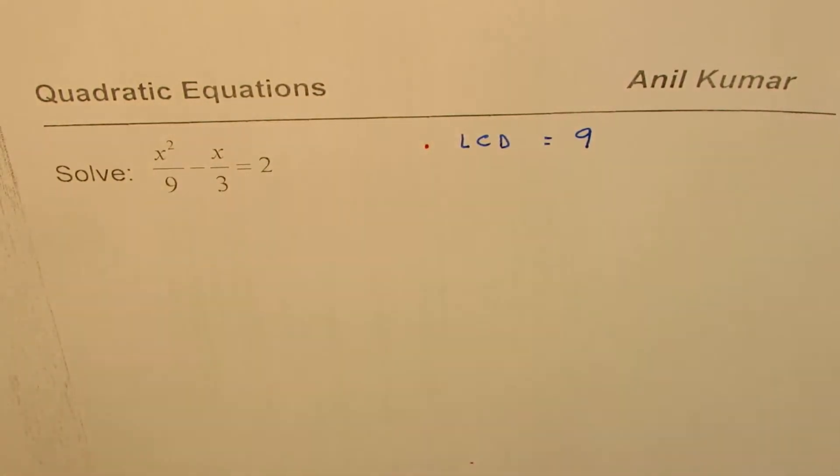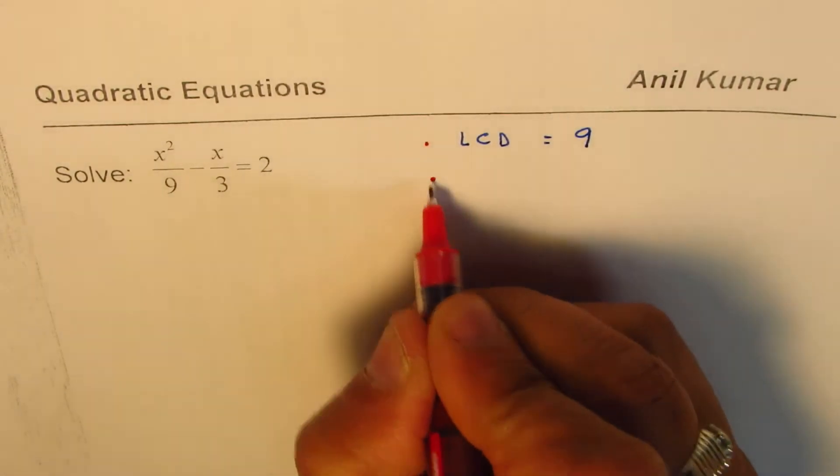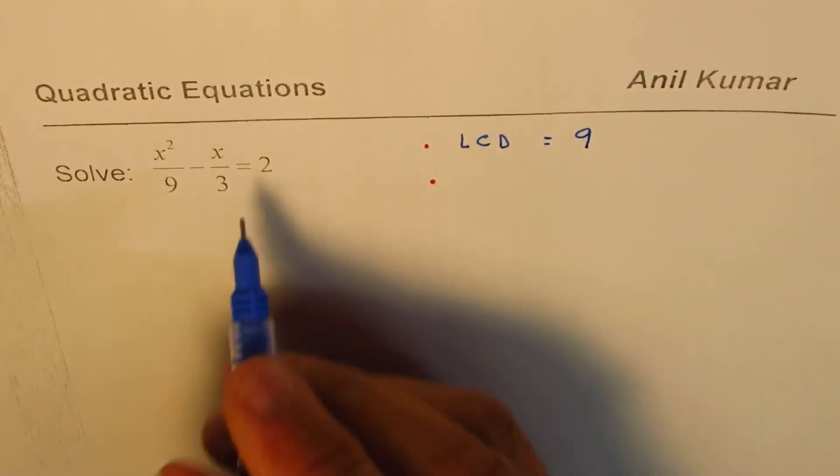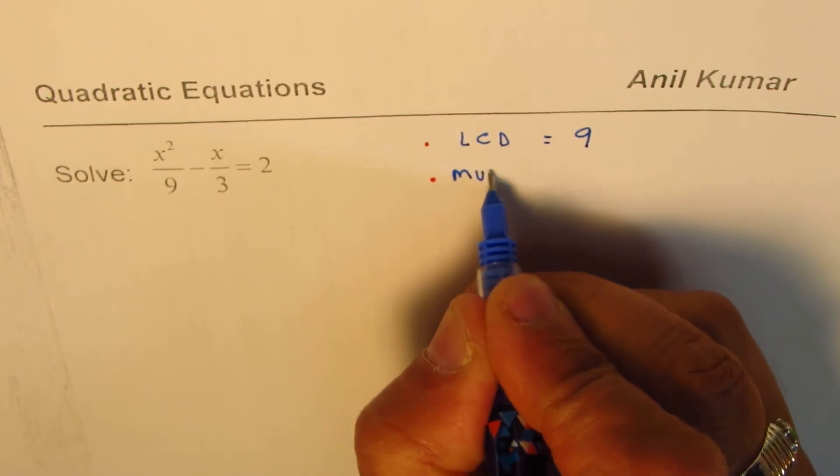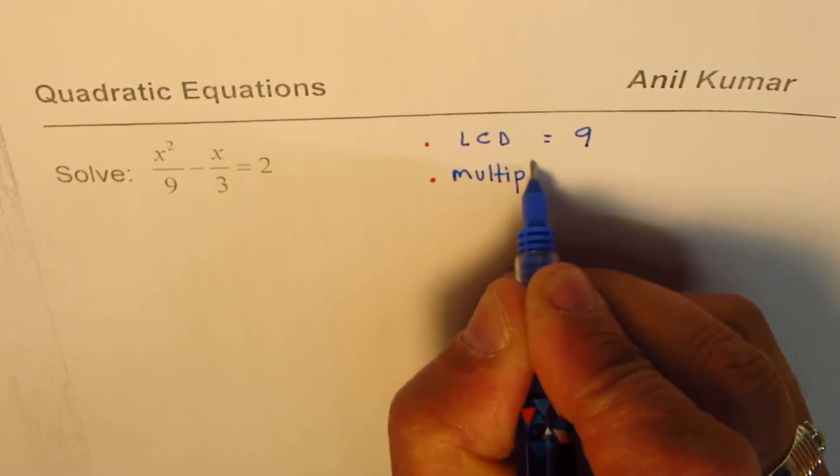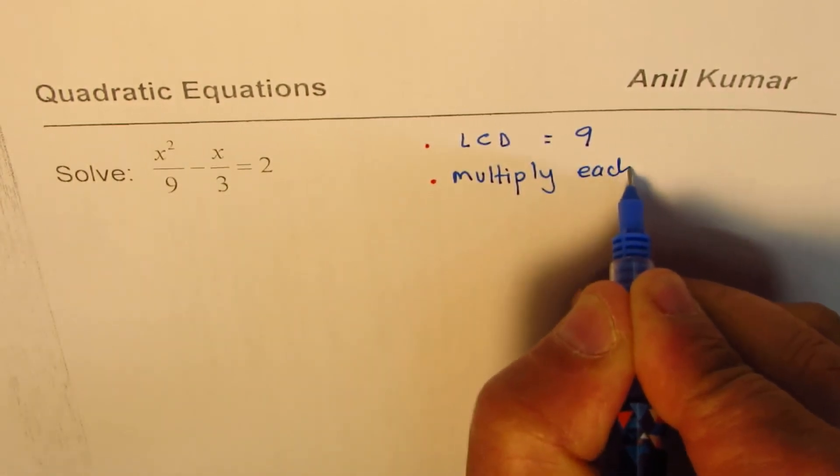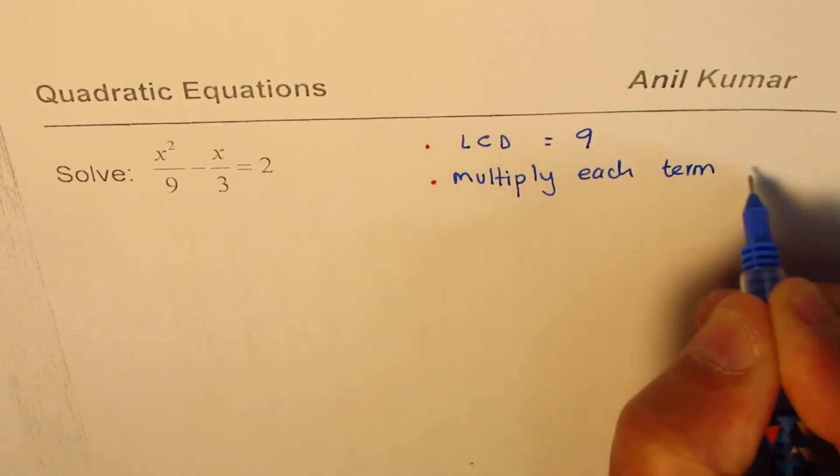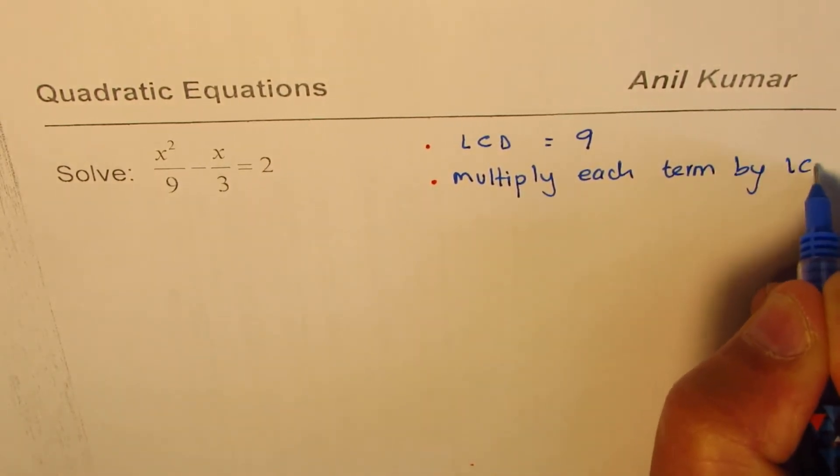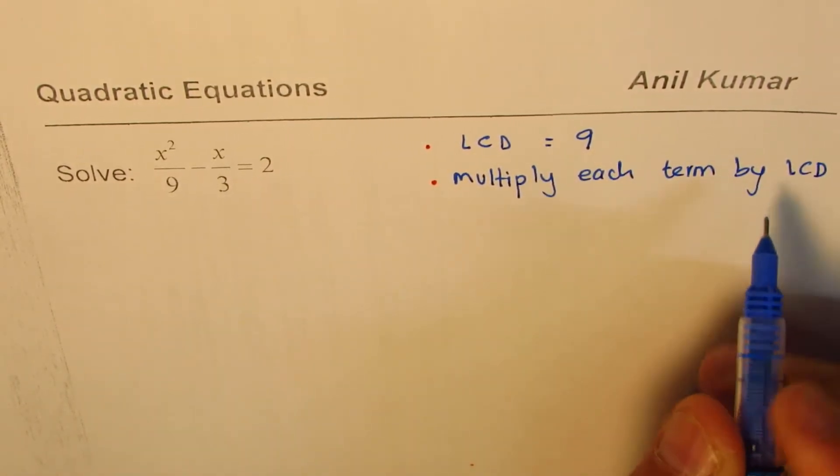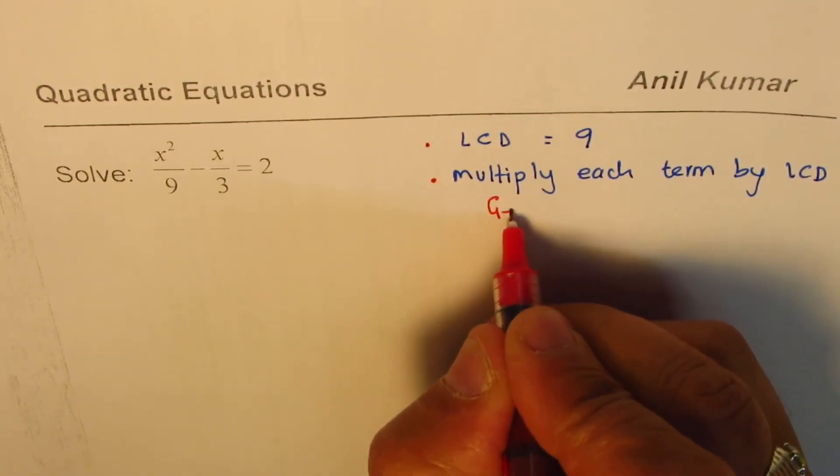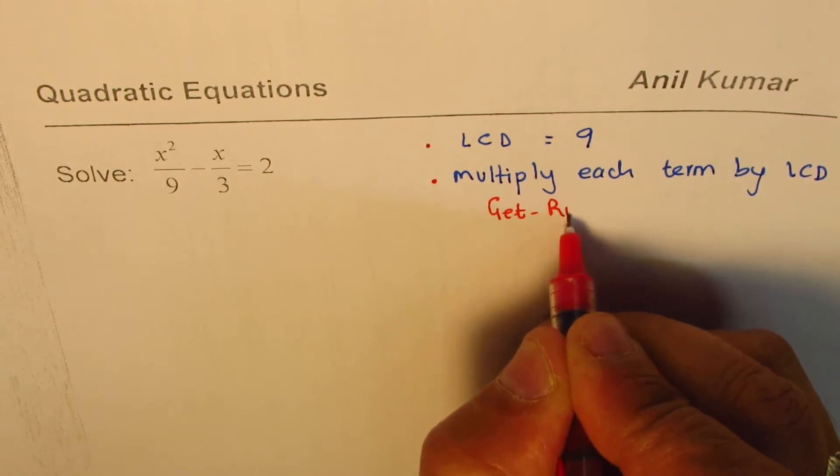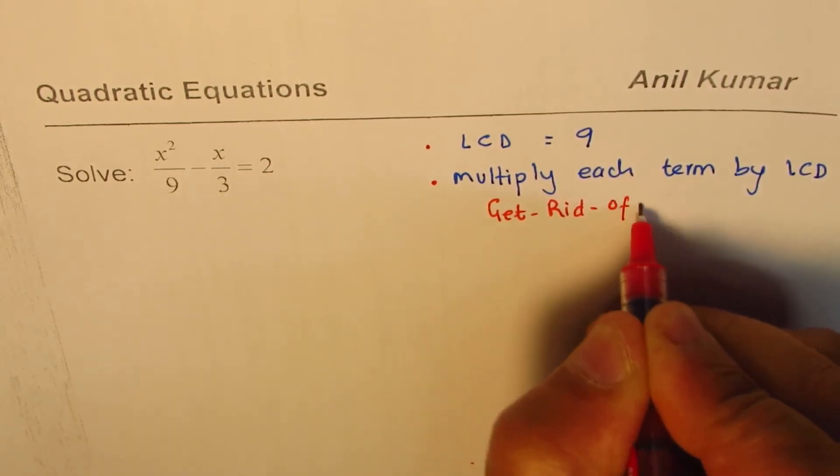Once you know what is the lowest common denominator, you can multiply each term by the lowest common denominator. So the next step is to multiply each term by lowest common denominator. When you do that, you get rid of fractions. So all this is done to get rid of fractions.